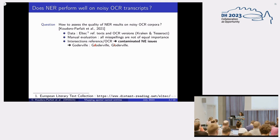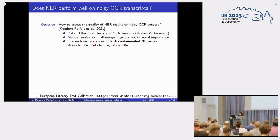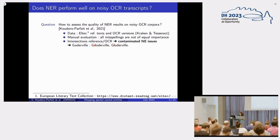We noticed that OCR provokes misspellings, and not all misspellings have the same importance. For example, Kraken proposes 'Goderville' with an E or 'Gloderville' with an L. It's a big difficulty for the machine to align these variants, which is why our evaluation often shows bad results — it's really difficult to match this kind of named entity.